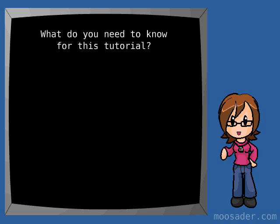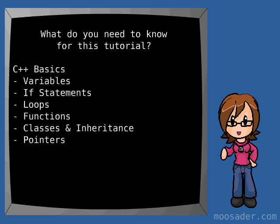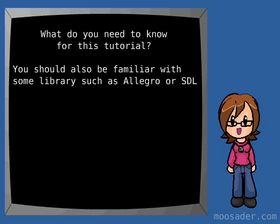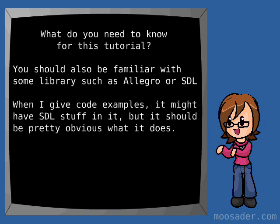This tutorial assumes that you know your basics of C++, including variables, if statements, loops, functions, classes, inheritance, and pointers. It also assumes that you know the basics of Allegro, SDL, or a library of your choice, handling graphics, input, and sound. I may give examples of code that use SDL, but it should be pretty obvious as to what it does, and you should be able to tell what function in your own library would correspond.